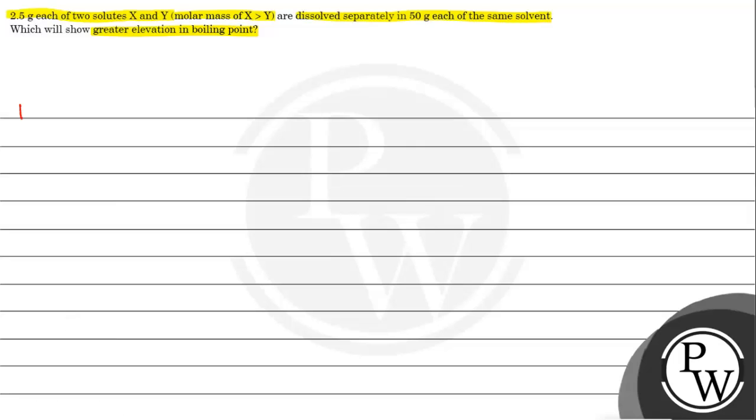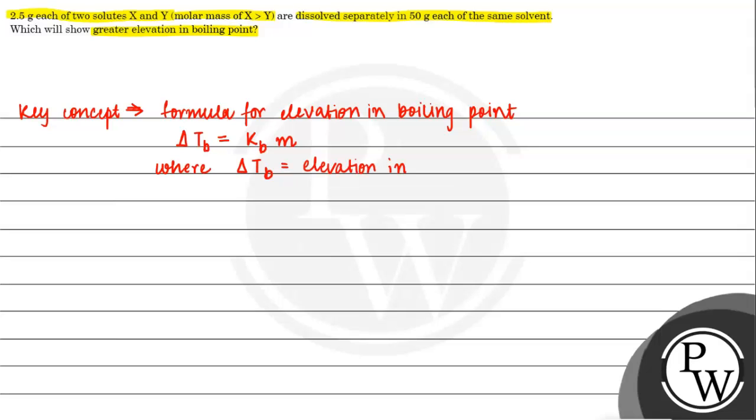Elevation in boiling point. In the key concept we will show the formula for elevation in boiling point. The formula is delta Tb equals Kb into molality, where delta Tb is elevation in boiling point. Kb is molar elevation constant, or we can say boiling point elevation constant.